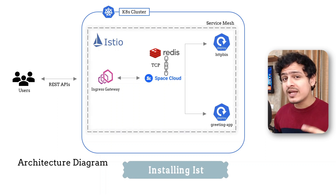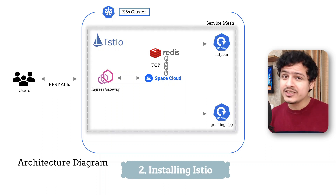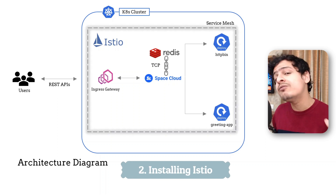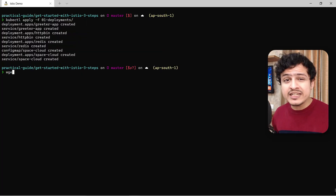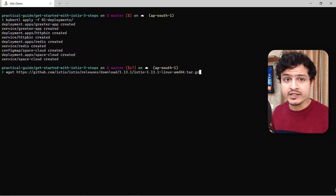Currently, all of this is working without a mesh. It's time we change that. Step number two is installing Istio and enabling it for our namespace. We first need to download the istioctl binary.